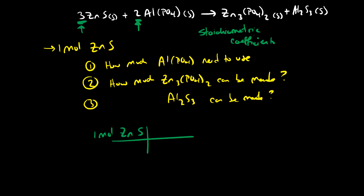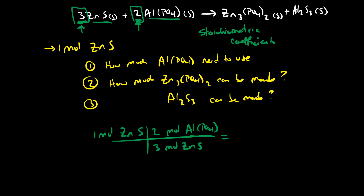Our balanced reaction tells us that for every three moles of zinc sulfide, we are going to consume two moles of aluminum phosphate. When we think about our units, moles of zinc sulfide cancel and we're left with moles of aluminum phosphate. When we actually do this math, we find out this is 0.667 moles of aluminum phosphate.